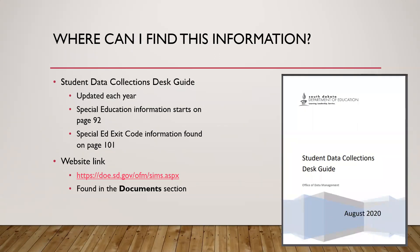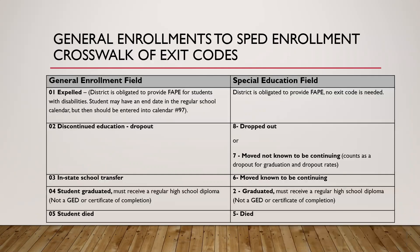You can find these codes in the Student Data Collection Desk Guide, put out by the Office of Data Management and updated every fall. You can find it via the provided link and on the website — look for sections with a plus sign and click to expand. The special education information starts on page 92 of the August 2020 desk guide, and these exit codes are on page 101.